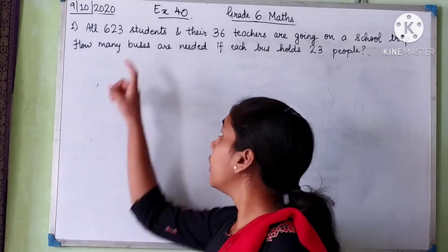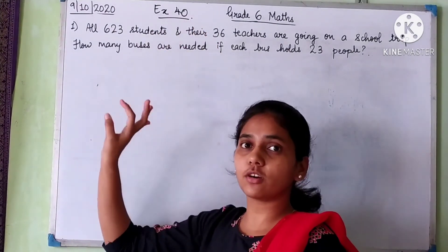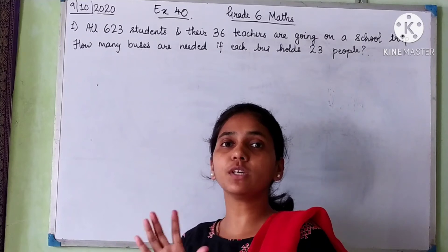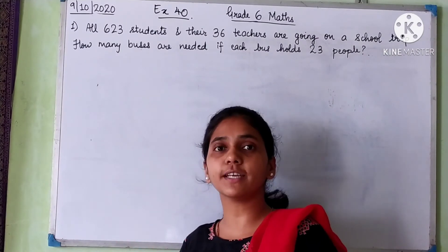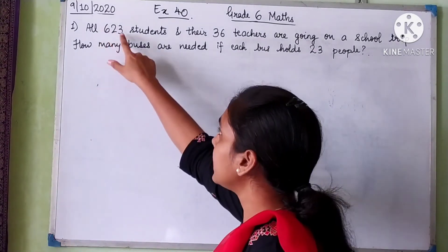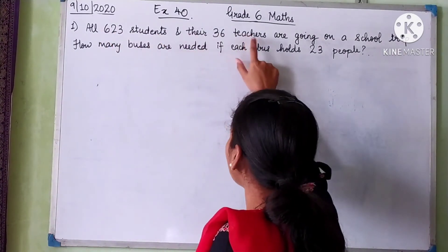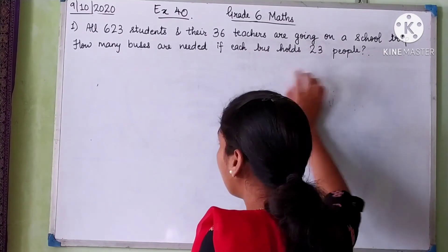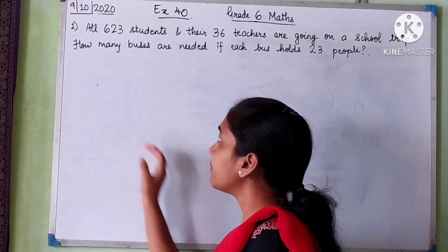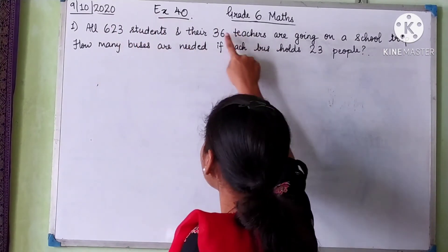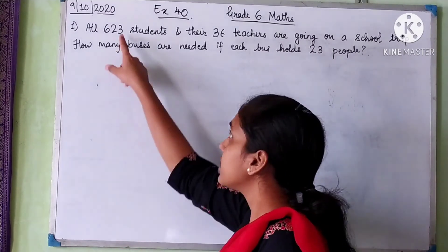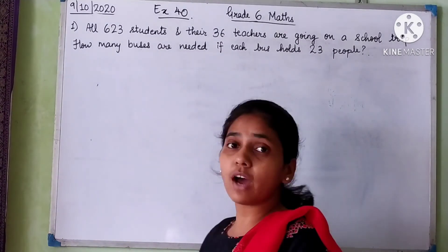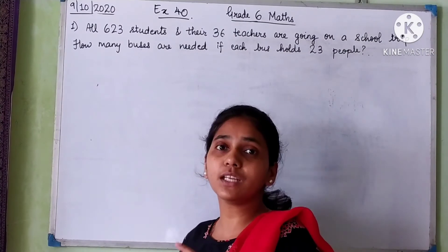Now exercise 4O — word problems based on division where we may get decimal answers. First question: 623 students and 36 teachers are going on a school trip. How many buses are needed if each bus holds 23 people? Total people = 623 + 36 = 659. Each bus holds 23 people, so we divide 659 by 23.